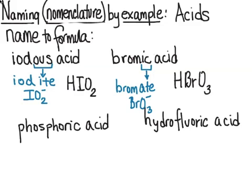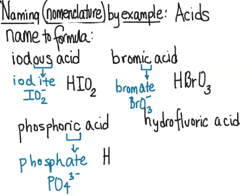The next one, phosphoric acid. Remember ic to ate, so phosphate. I look for the polyatomic ion that is phosphate. And that's PO4 with a negative 3 charge. That means I have to add three hydrogens to give me a neutral compound. That's H3PO4 is phosphoric acid.